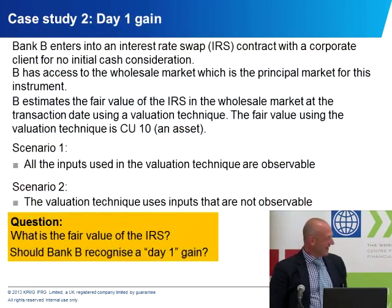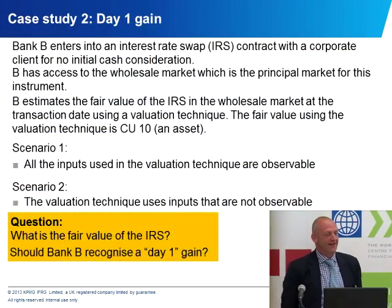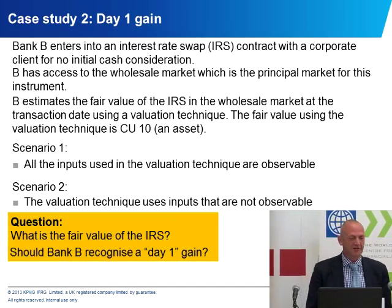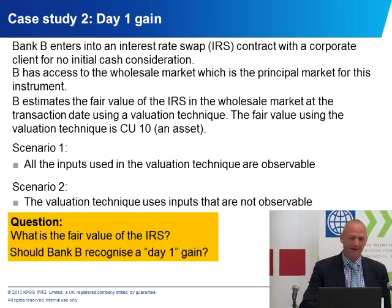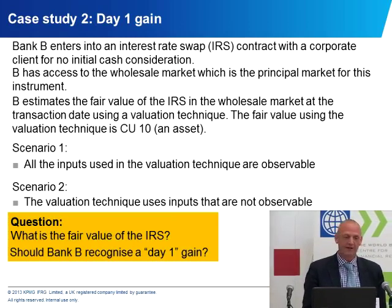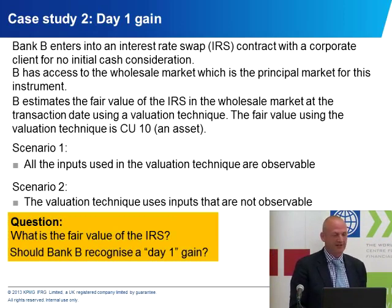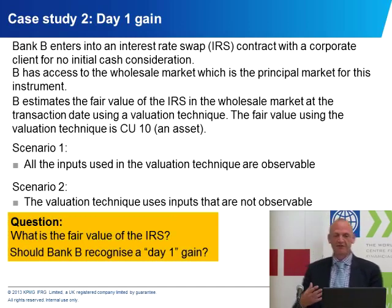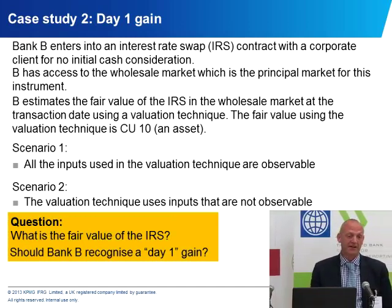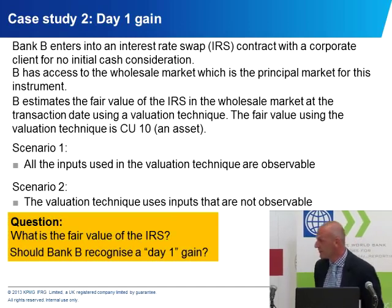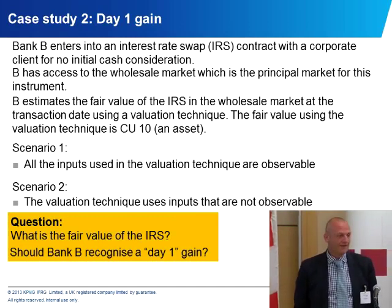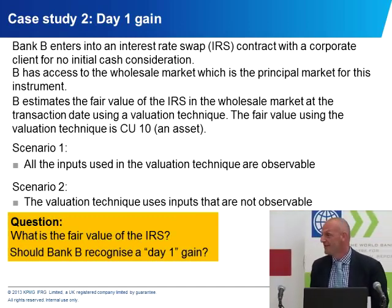Case study two deals with day one gains — or indeed day one losses — a fairly common practice issue in the banking industry. A bank has entered into an interest rate swap with a corporate client. The bank can also access a wholesale market for interest rate swaps. If it were to price the swap in the wholesale market, even though the transaction price with the corporate client was zero, it would estimate the value of the swap as an asset of 10 at the date of the trade.